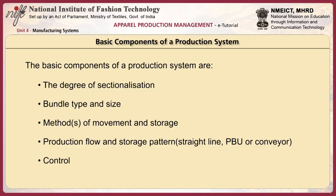In this unit, we will be understanding and studying the basic components of a production system, which are categorized based on the following: the degree of sectionalization, bundle type and size, methods of movement and storage, and production flow and storage patterns and control. The degree of sectionalization has already been discussed in Unit 3. We will be studying in detail about the various bundle types, the different methods of movement and storage used in the apparel industry, and the various types of production flow and storage patterns currently followed in the garment industry.